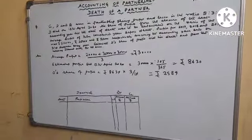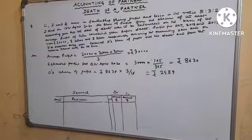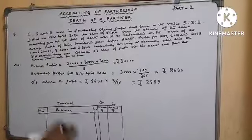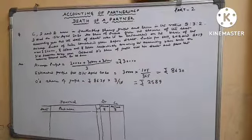How much is D's share of profit? 2,589. Now what to do?